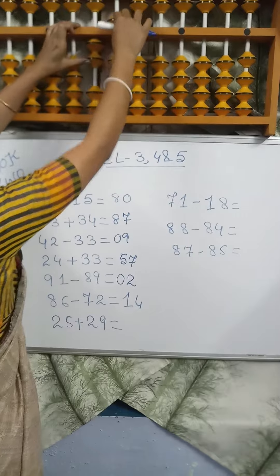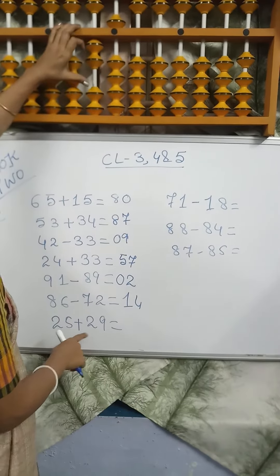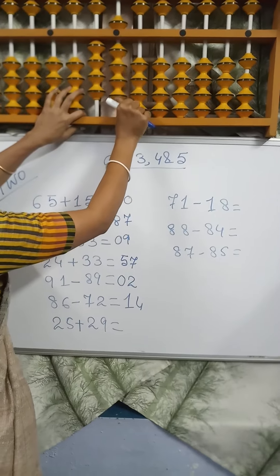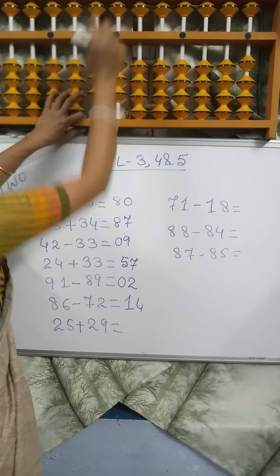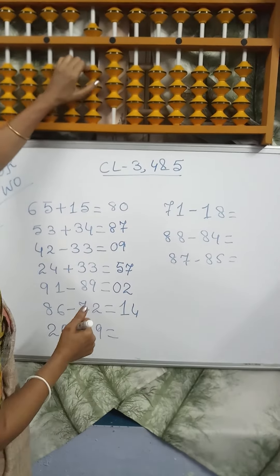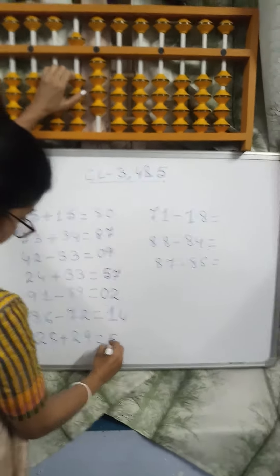25 plus 29. 2 for 9, combination 9, minus 1 plus 10. Answer is 54.